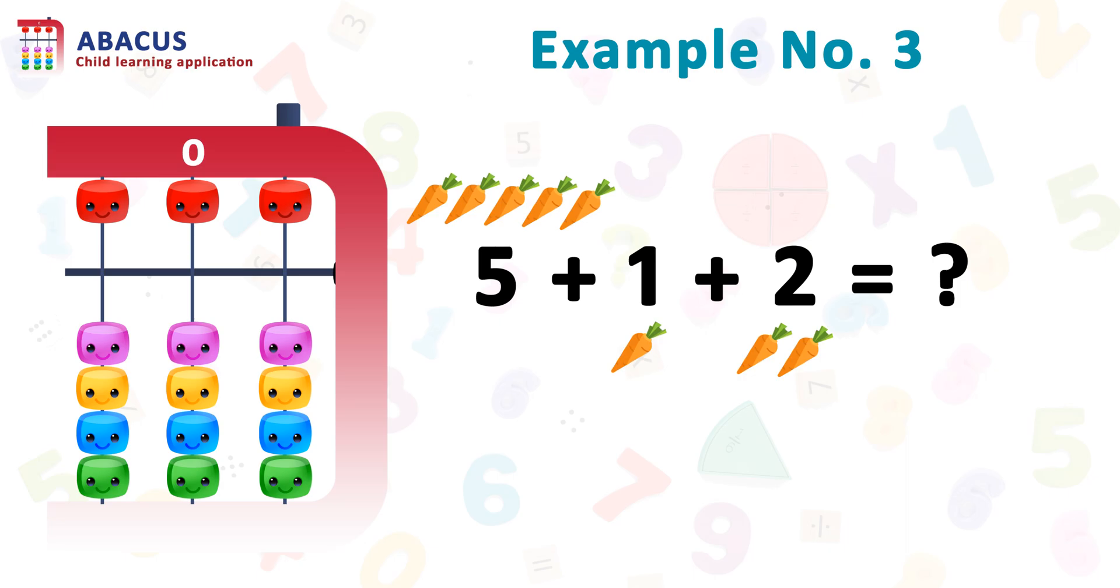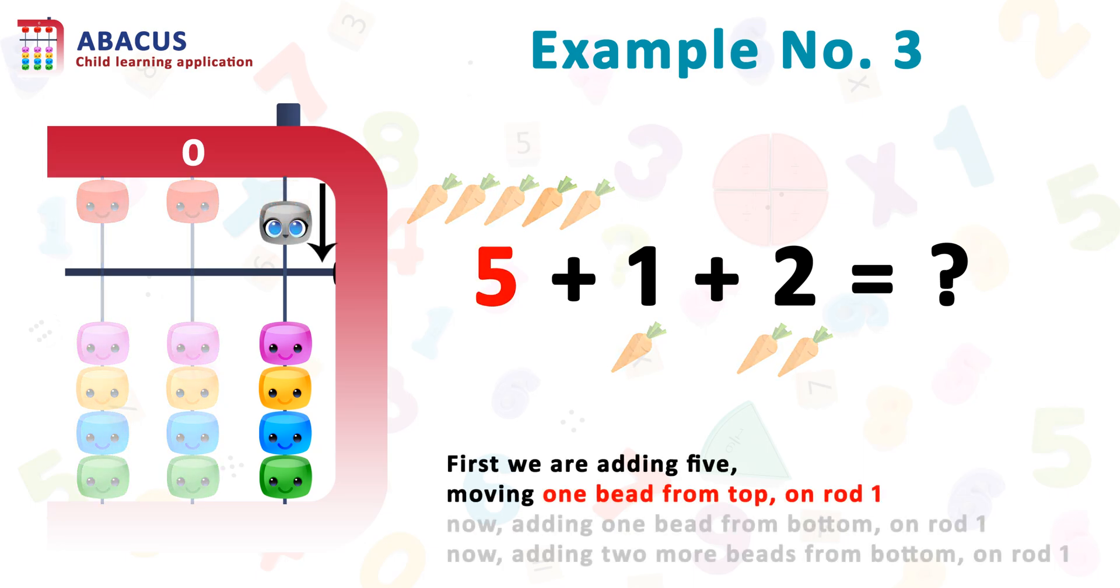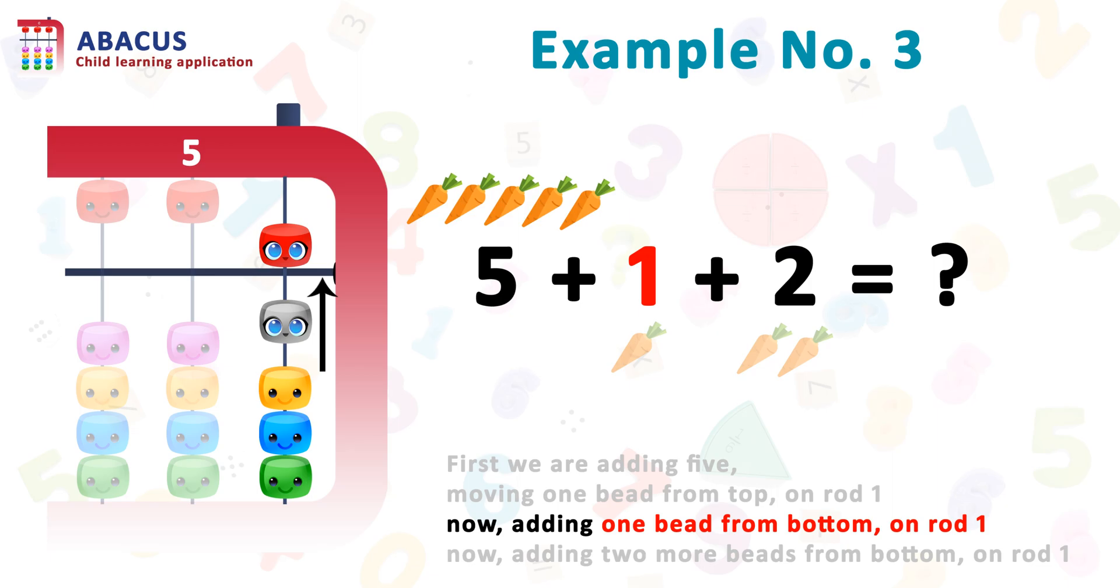Example number three: five plus one plus two. First let's set five. For five, we are moving the top bead downward on rod one. Now to add one, move one bead from bottom to top on rod one.